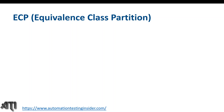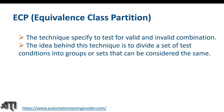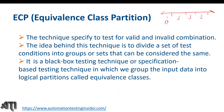Now let's talk about equivalence class partitioning. This technique is specified to test valid and invalid combinations. The idea is to divide a set of test conditions into groups or sets that can be considered the same. We divide different ranges of values into different partitions and take one value from each partition to test the application. It is a black box testing technique in which input data is grouped into logical partitions called equivalence classes.